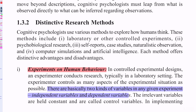In a controlled experimental design, an experimenter conducts research typically in laboratory settings. The experimenter controls as many aspects of the experimental situation as possible. There are basically two kinds of variables in any given experiment: the independent variable and the dependent variable.